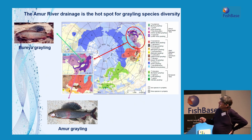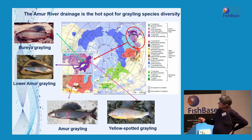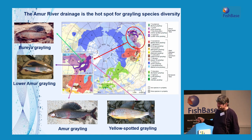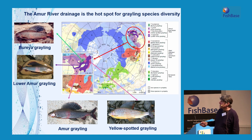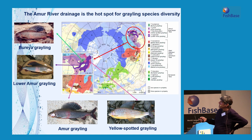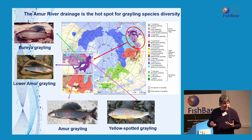In the Amur drainage we have the Amur grayling, an endemic species in one river system called the Bureya grayling, the lower Amur grayling, and a fourth species — the yellow-spotted grayling. There are four species of grayling all from this one relatively small region. What's very unique is that up to three of these species live in the same rivers, and the yellow-spotted grayling and the lower Amur grayling can be found swimming right next to each other. When you examine them genetically, they're four million years apart, and they don't hybridize — it's very fascinating.